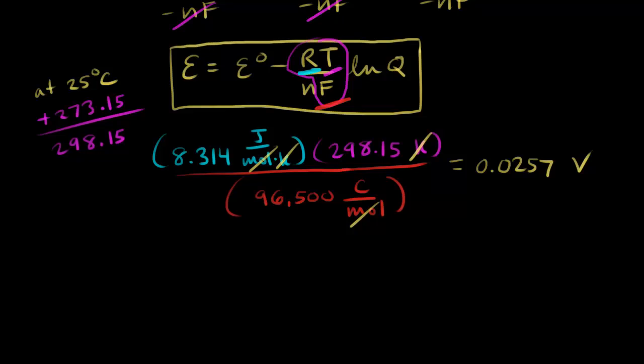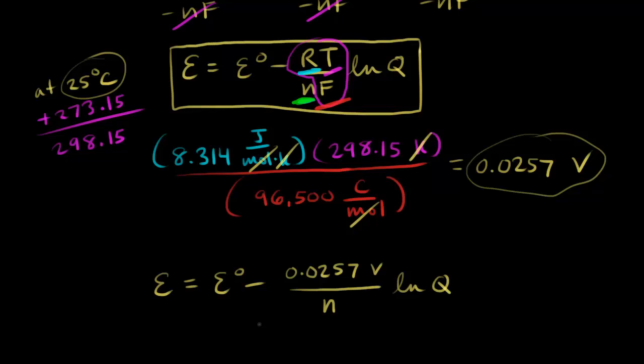We can write another form of the Nernst equation. If your reaction's at 25 degrees C, you can write the Nernst equation this way. The cell potential E is equal to the standard cell potential E0 minus, so all that RT over F is equal to 0.0257 volts. We still have N. Remember, N is the number of moles of electrons that are transferred in your redox reaction. And we still have the natural log of Q, the reaction quotient. So here is another form of the Nernst equation.